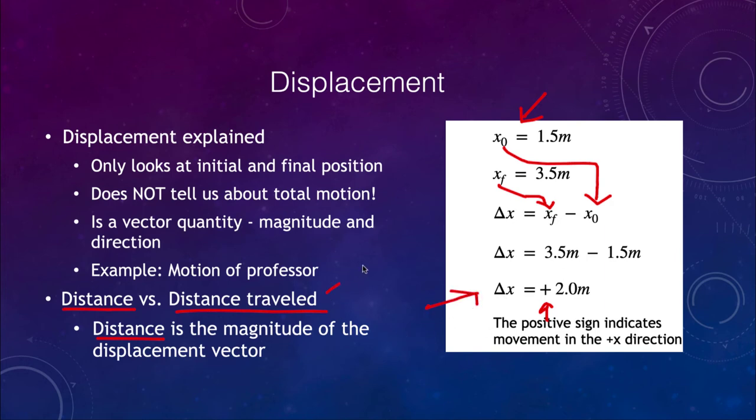So the distance here would be two meters. That is different than the distance traveled by the professor. That is not something that we are looking at here. In this case, we only want to look at the net movement. So in this case, the professor ended up two meters to the right of where she had started.